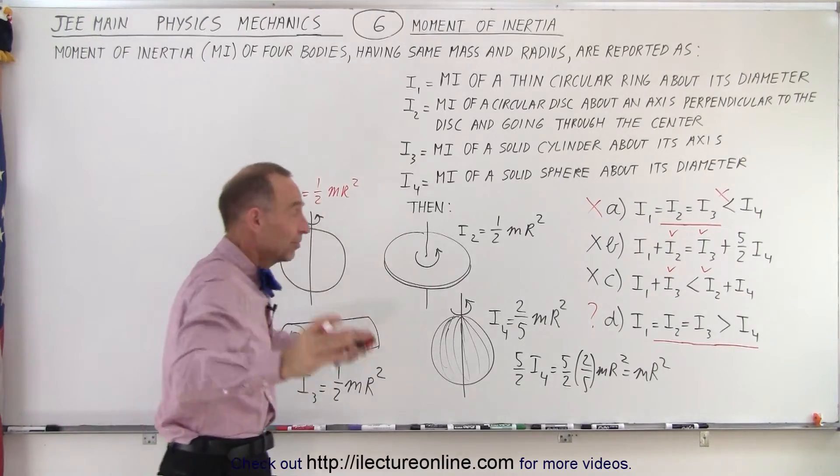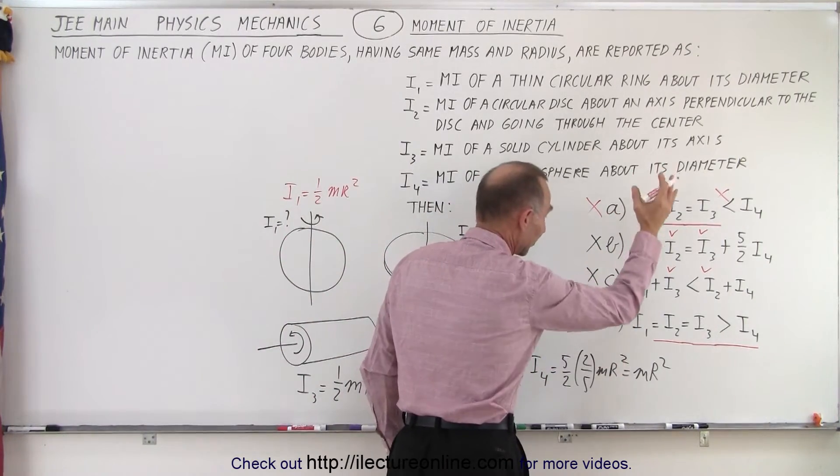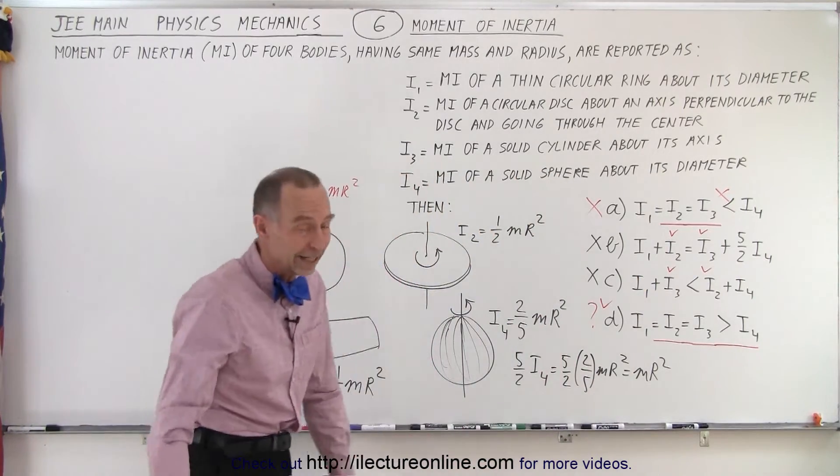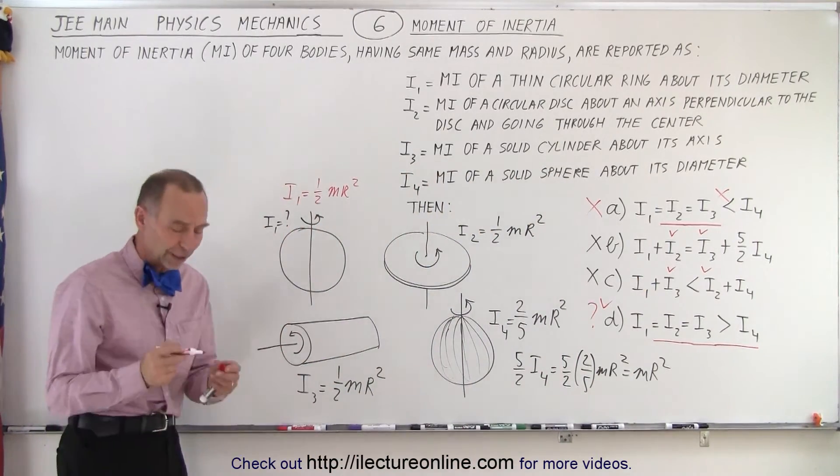And if you don't know that, you just have to go on fate, so to speak, and say, well, since everything else cancels out, this must be the correct answer, which indeed it is. Which makes I1 equal to one-half MR squared.